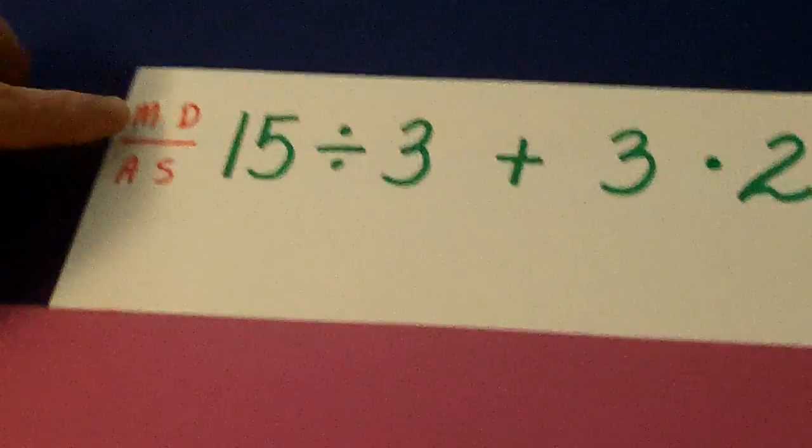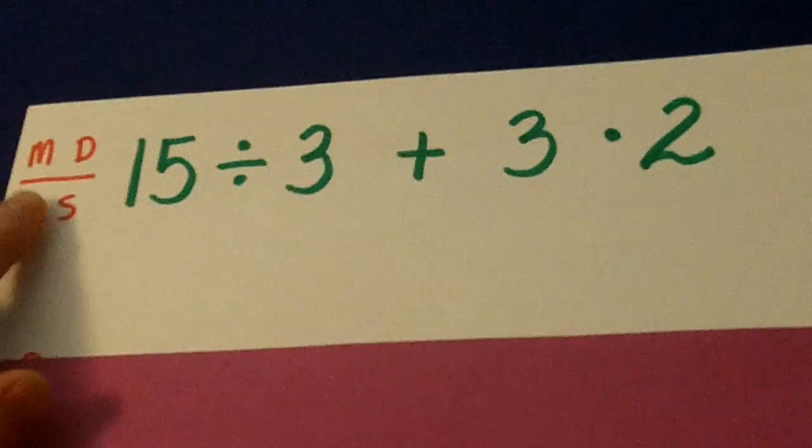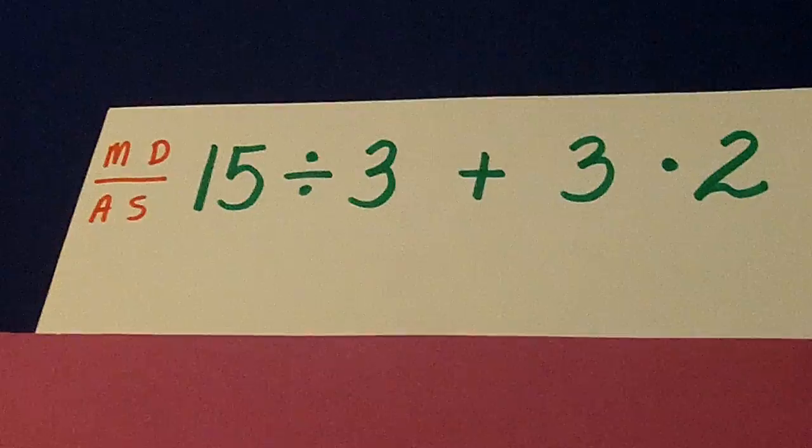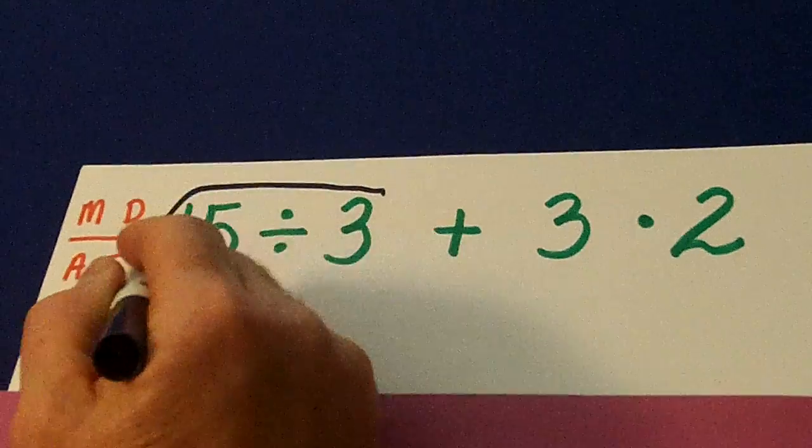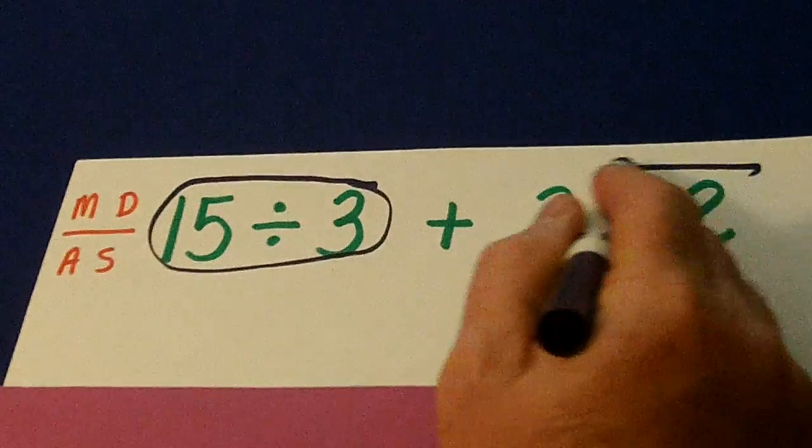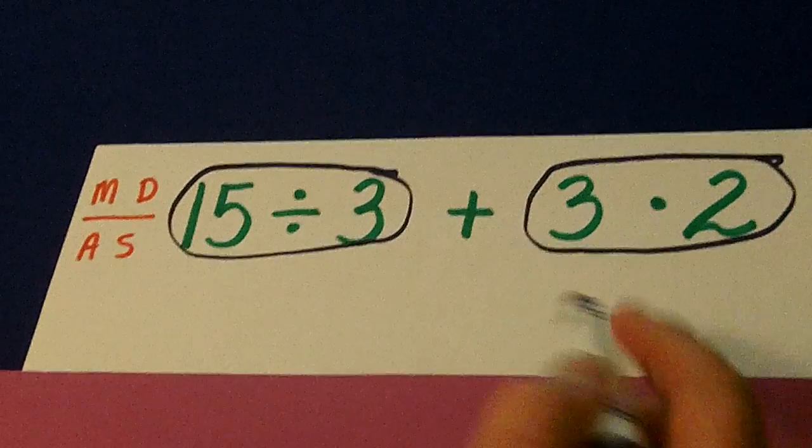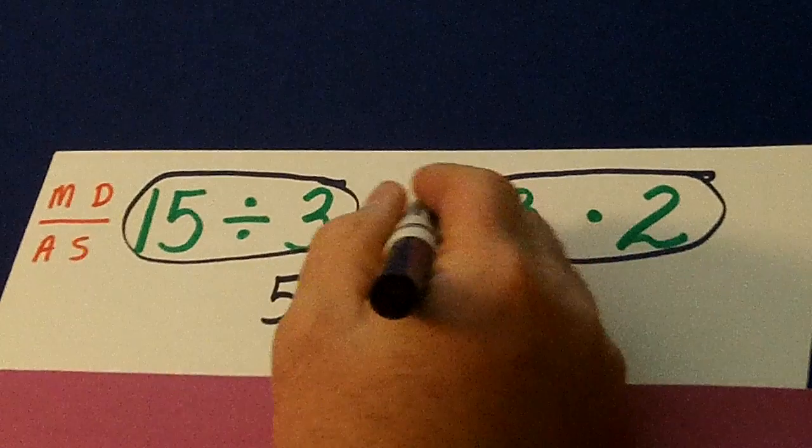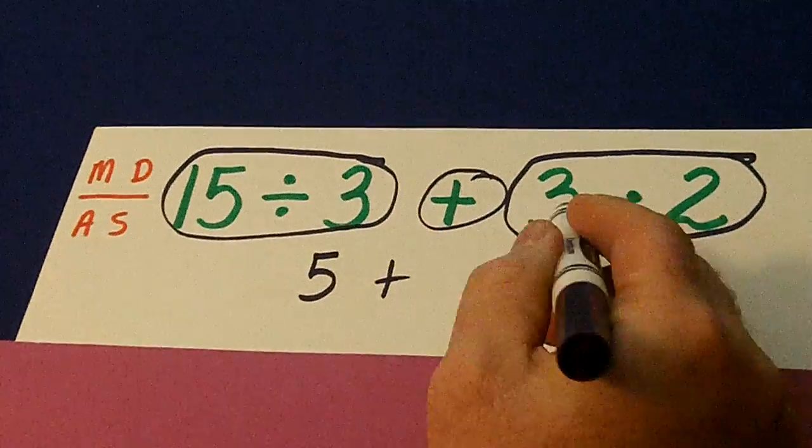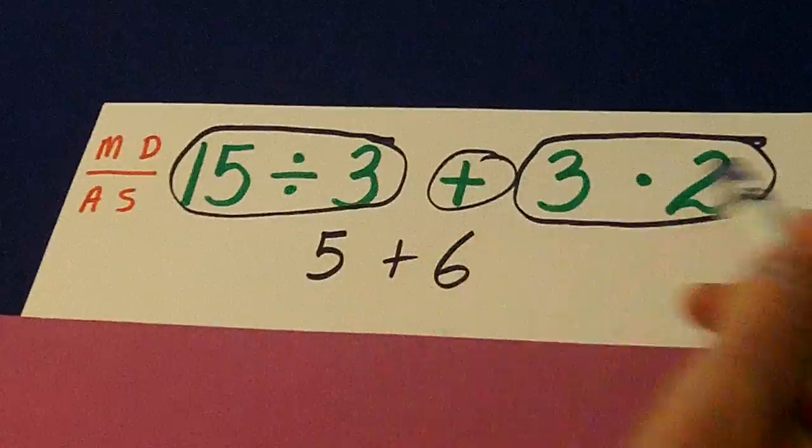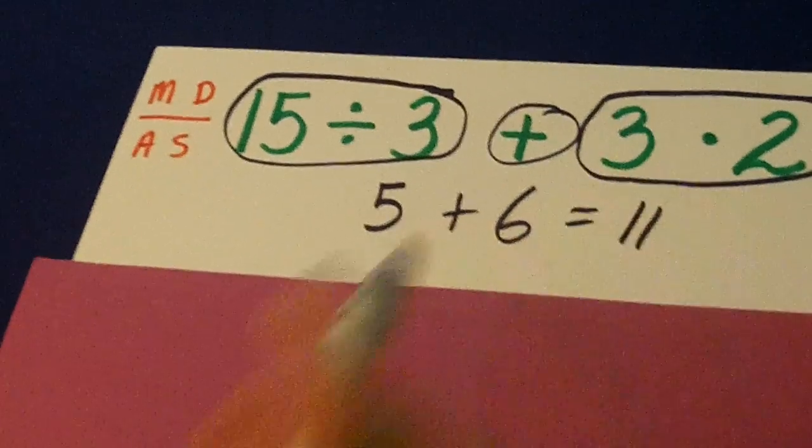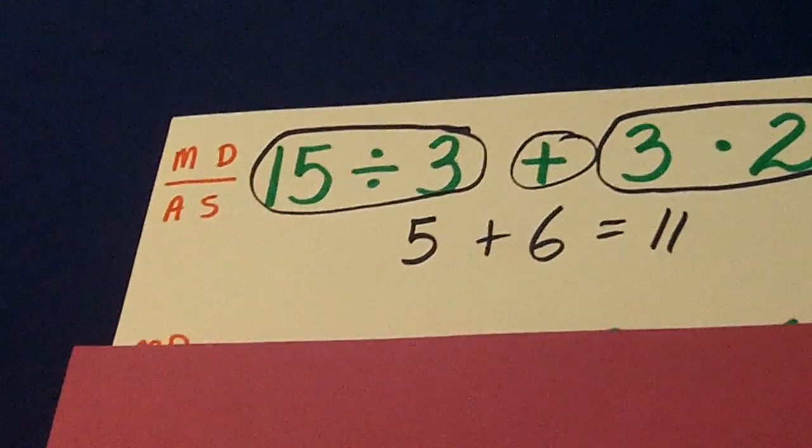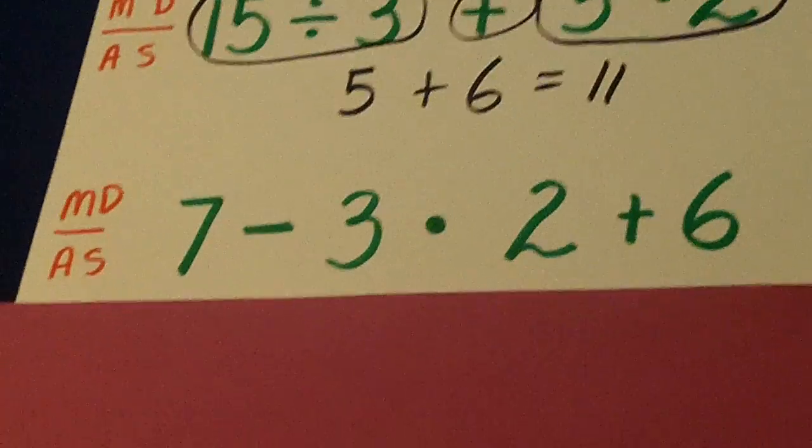We have this symbol right over here. Multiplication and division before addition and subtraction. That means we're going to do these two operations on the edge before the middle one. 15 divided by 3 is 5. Bring down the plus sign. 3 times 2 is 6. That's 11. It started out fairly complex, but then it's easy because we know our order.